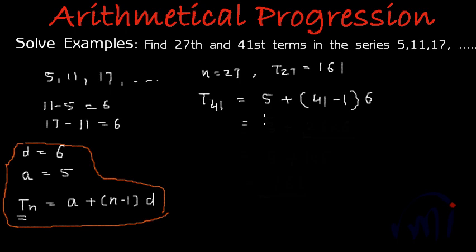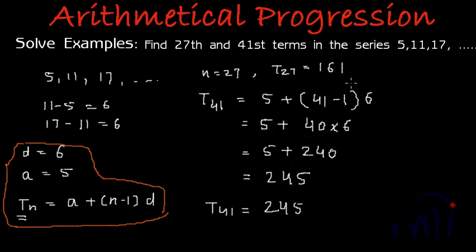This will equal 5 plus 41 minus 1 is 40, and then we have this multiplied by 6. This will equal 5 plus 40 multiplied by 6 is 240. This equals 245. So T_41 will equal 245, and here we have T_27 which is the 27th term. These are the two results of this question.